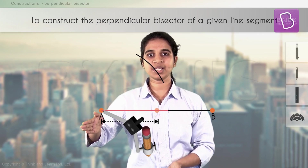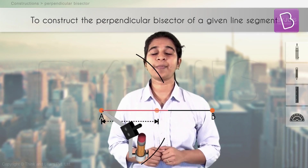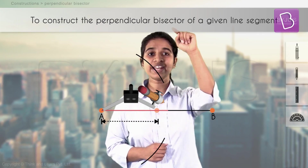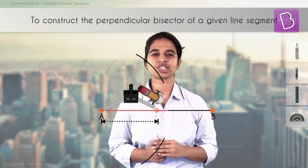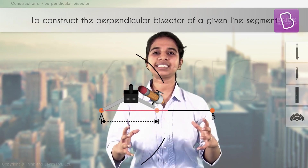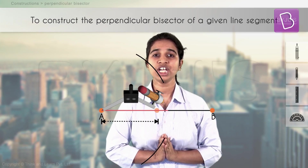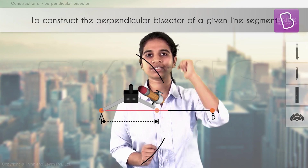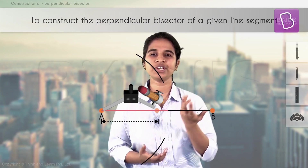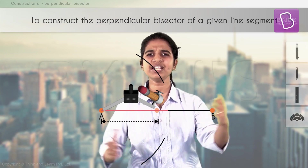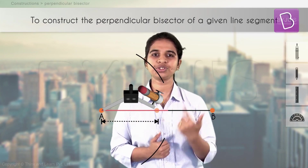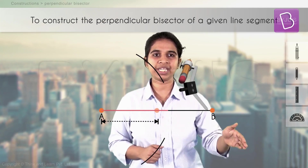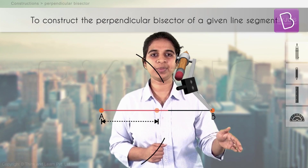We take a length more than half of AB and draw an arc on top as well as the bottom, because we need to draw a perpendicular bisector — which is a line. To draw a line you require two points. Why not just one arc? Because we need two points to draw a line. If we have only one point, an infinite number of lines can pass through it. Hence, two arcs to get two points so that we can draw one unique line.